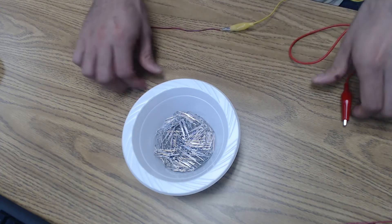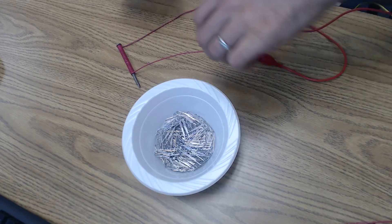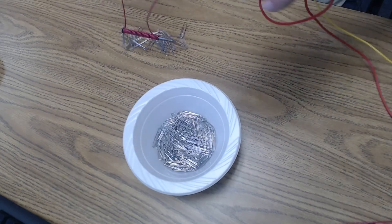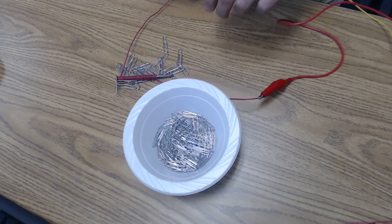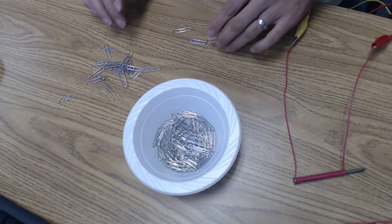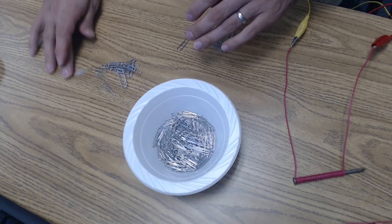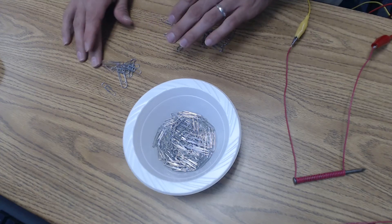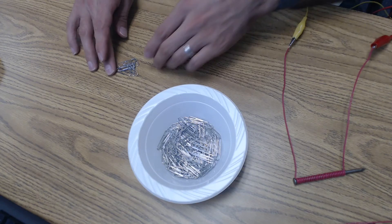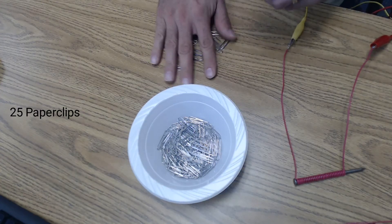And our third trial. Let's count them up. One, two, three, four, five, six, seven, eight, nine, ten, eleven, twelve, thirteen, fourteen, fifteen, sixteen, seventeen, eighteen, nineteen, twenty, twenty-one, twenty-two, twenty-three, twenty-four, twenty-five.